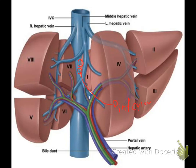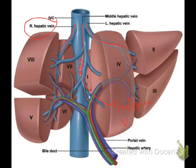There are three major hepatic veins: the right hepatic vein, the middle hepatic vein, and the left hepatic vein. These three veins drain most of the liver's blood into the inferior vena cava. So in summary, the inferior veins drain directly to the anterior wall of the IVC, and the three major veins — right, middle, and left — drain the rest.